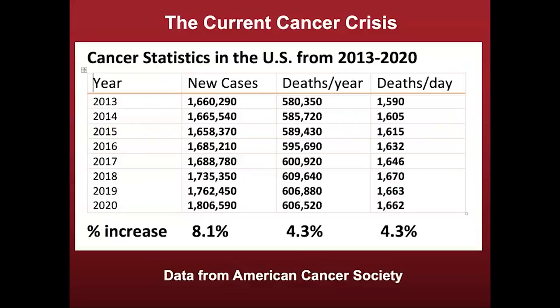I'd like to start my presentation with an overview of the current cancer crisis so that we can get a full appreciation of the challenges that we have. This chart, data from the American Cancer Society, shows the number of new cases, deaths per year, and deaths per day from 2013 to estimated information from 2020. There is a significant increase in the number of new cases over the years, about a 4.3% increase in the number of deaths from cancer in the United States per year, and over 1,600 people a day dying from cancer during these periods. This is rather depressing and concerning information, stating that we have made little, if any, major progress in reducing cancer deaths over this period.